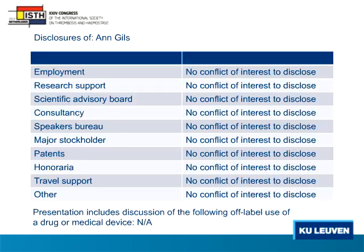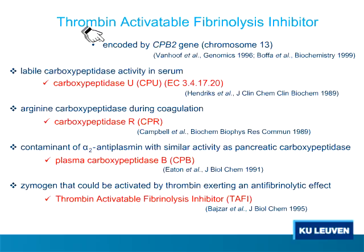I have no disclosures to announce. The protein I will talk about today is encoded by the CPB2 gene. We know that it is activatable by thrombin, and if activated, it exerts an anti-fibrinolytic effect through the cleavage of lysine and arginine residues — the carboxypeptidase effect. Due to the different features of this protein, a number of names have been used throughout the literature. However, in our laboratory, we always call it TAFI, or thrombin-activatable fibrinolysis inhibitor, and throughout the rest of my presentation I will refer to this protein as TAFI.